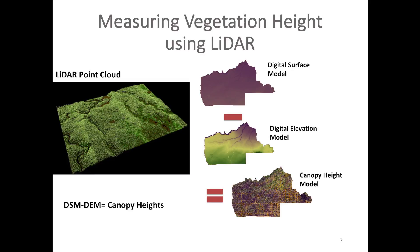I obtained LiDAR data from the Government of Alberta to measure heights on the seismic lines. Using the LiDAR point cloud — you can see a visualization here with a little well pad and a seismic line — I created a digital surface model representing the highest points on the landscape, then a digital elevation model representing the ground points. By subtracting the elevation model from the surface model, I got my canopy height model at a 2-meter resolution.